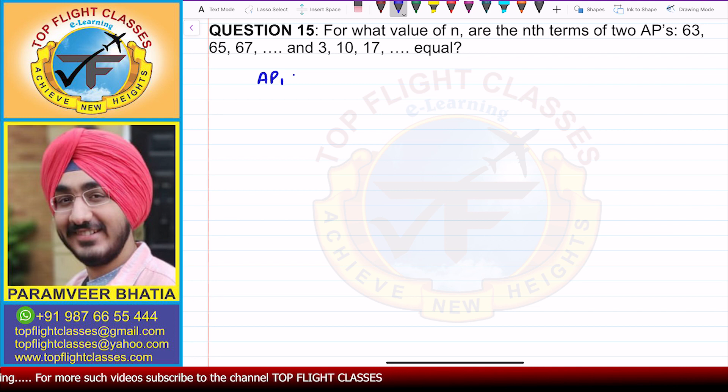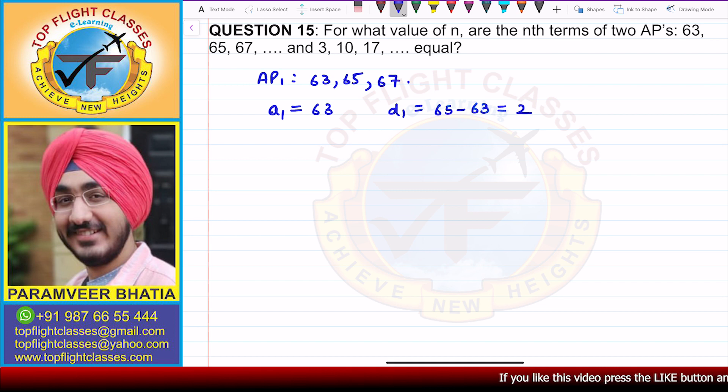First, let's look at the first AP. First AP is 63, 65, and 67. Let us say that for the first AP, the first term is A1, that is equal to 63, and common difference D1 is the second term 65 minus the first term 63, so that is 2.